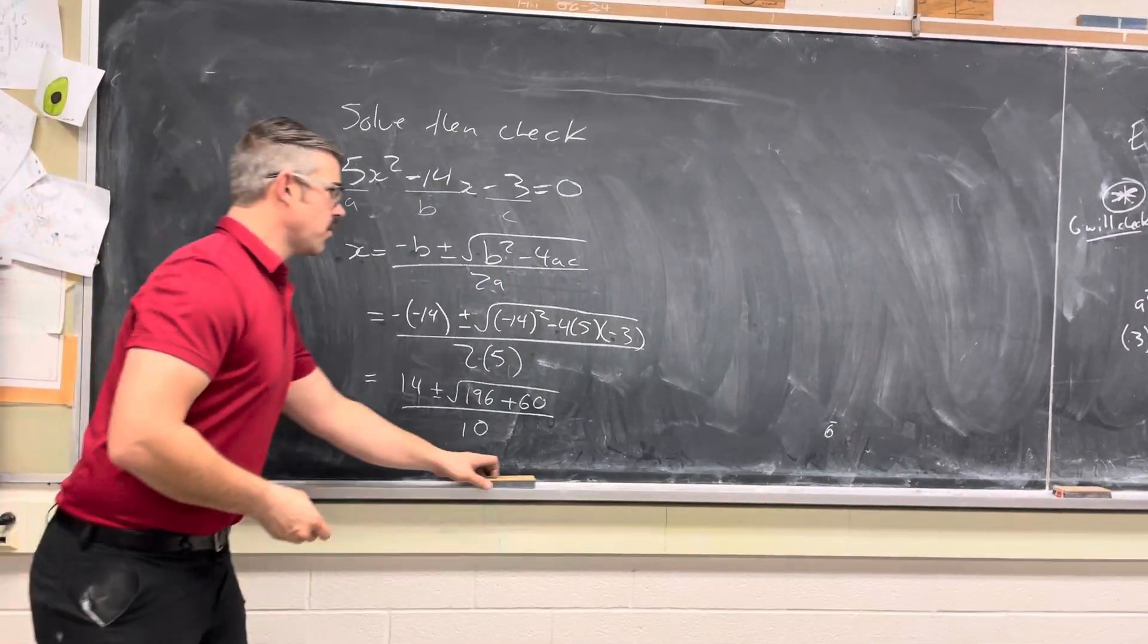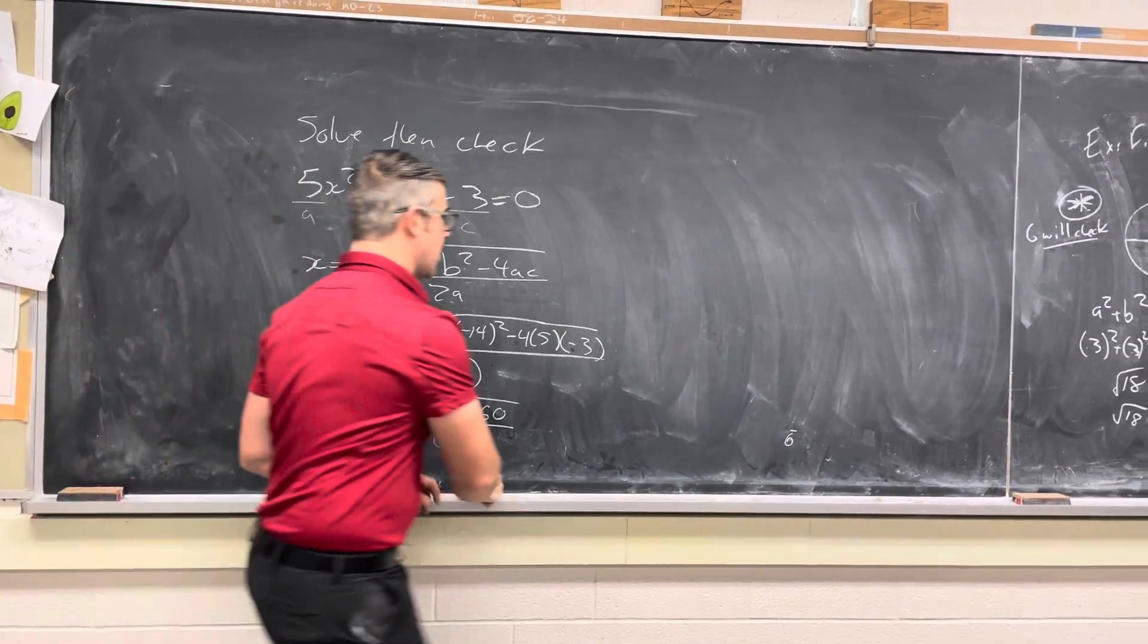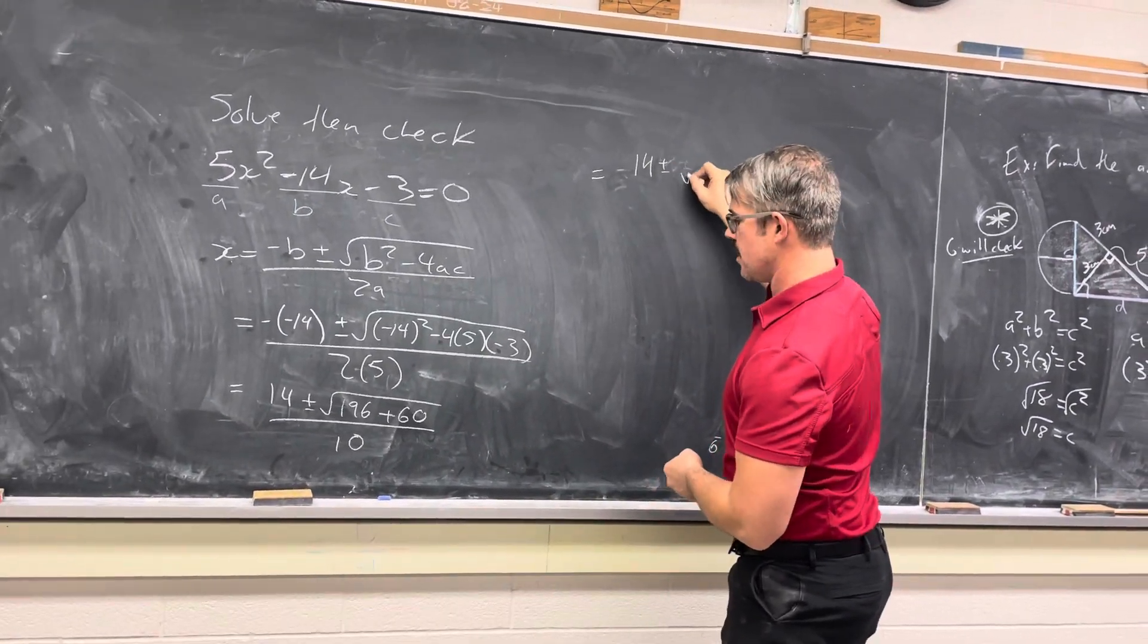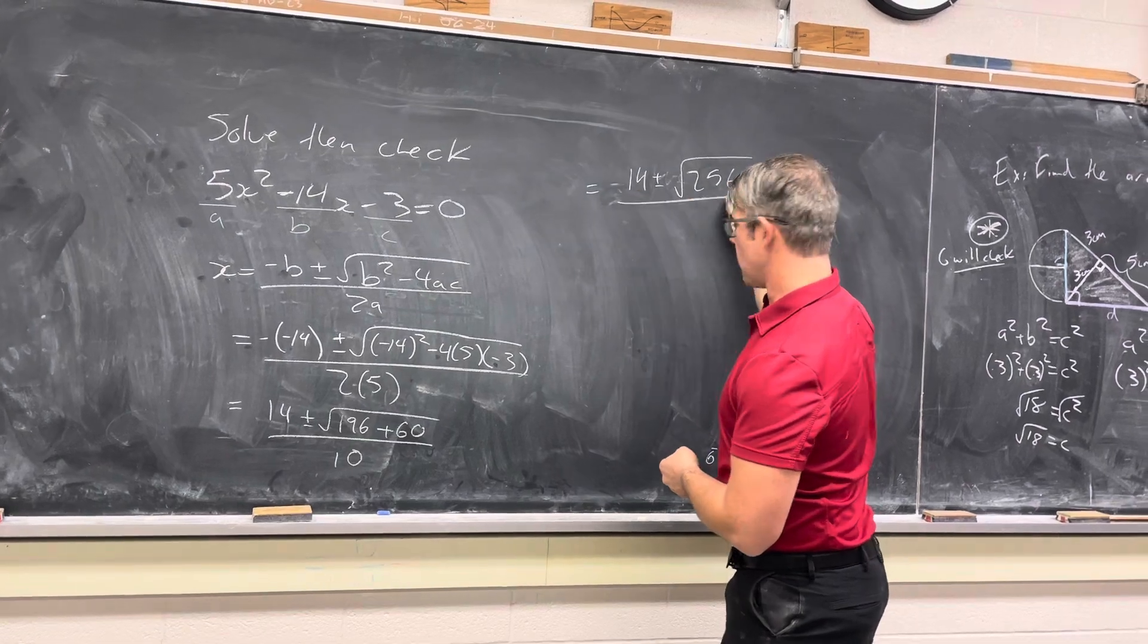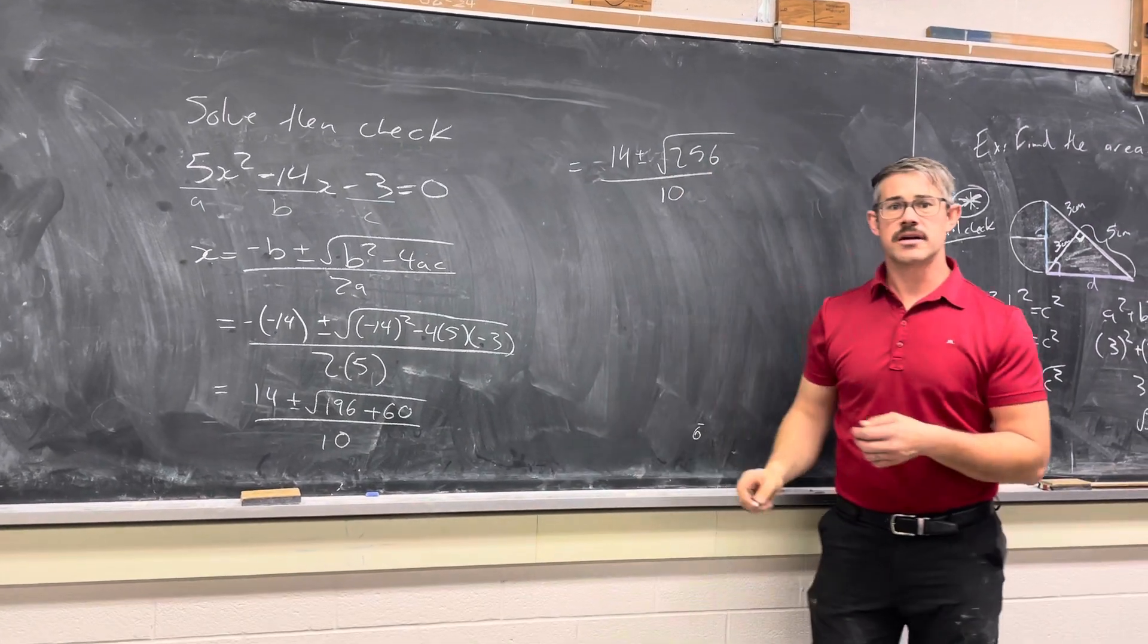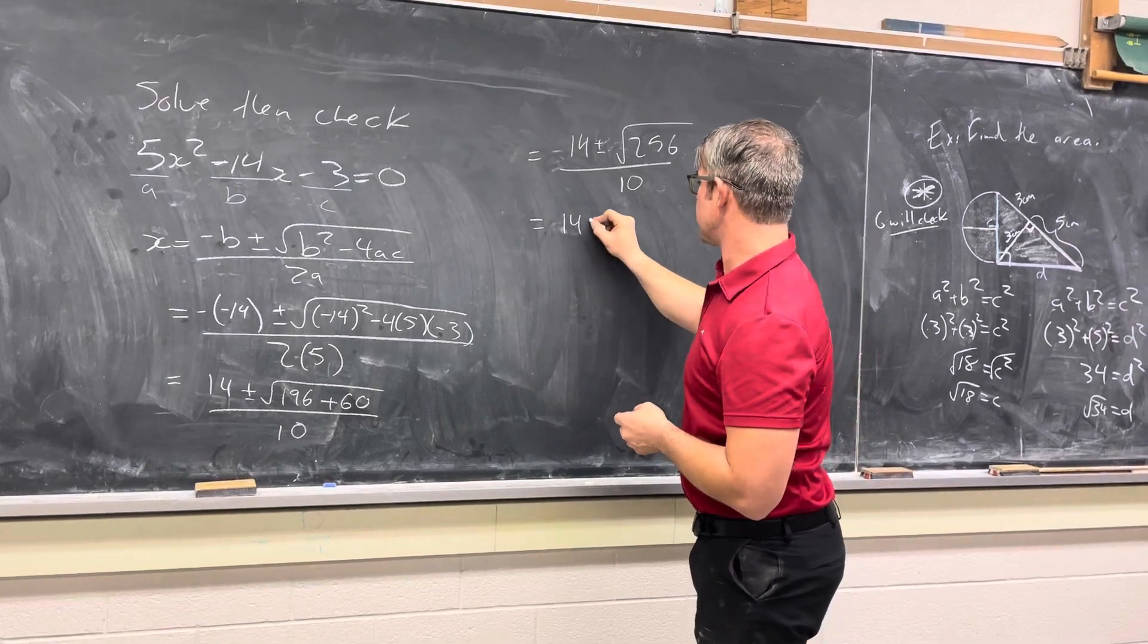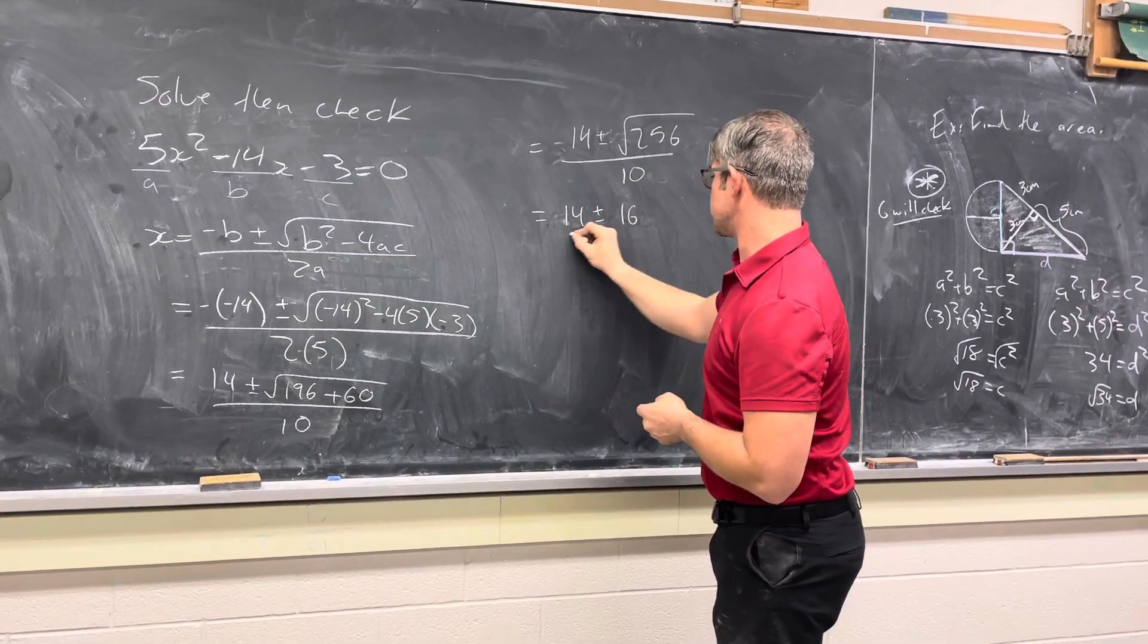And we're going to end up just over here, adding our radical together. We'll have 14 plus or minus the square root of 256 over 10. Now, 256 is 16 squared. So this is going to be 14 plus or minus 16 over 10.